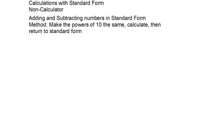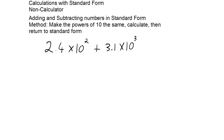To add and subtract numbers in standard form, we need to make the powers of 10 the same. For example, if I wanted to do 2.4 times 10 to the power of 2 plus 3.1 times 10 to the power of 3, we need to change one of the numbers — either 2.4 times 10 to the 2 or 3.1 times 10 to the 3. I'm going to change the power of 2 to a 3.